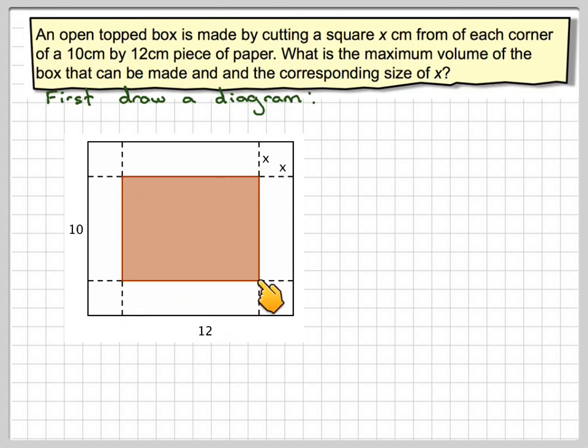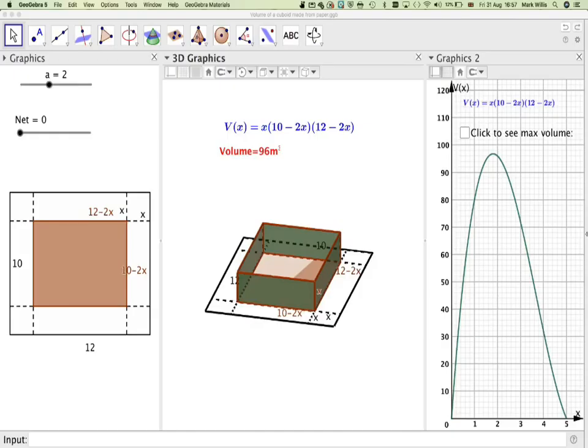We've got to find the size of x so that this makes a maximum volume. Just so you can actually see what we're actually trying to do here, I've got this GeoGebra app, and again I'll put the GeoGebra app link in the notes of the video. So here we have our box piece of paper. This is 12, this is by 10.